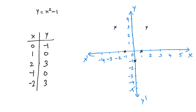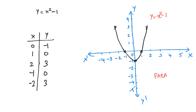This is not a straight line. We have to plot this graph. This is y equal to x squared minus 1. It is not a straight line — it is a parabola.